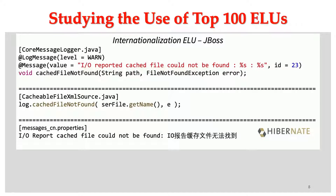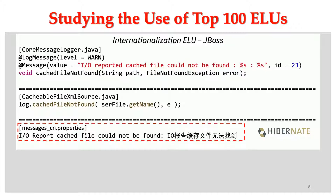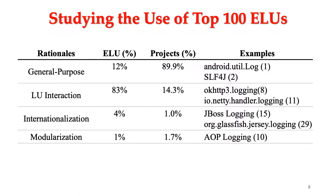Next, we show an example of external LUs being used for internationalization. This code snippet is from Hibernate, a popular ORM framework being widely used around the world. We first define the log API in the core message logger via annotations for the levels, static text, and dynamic contents. In practice, we directly use this method to invoke logging. If we want to translate the log message into other languages, we only need to define a separate configuration file. In this example, we translate the English log messages to Chinese ones. Among all four rationales, LU interaction accounts for the majority of cases, at 83%.